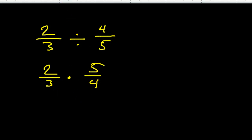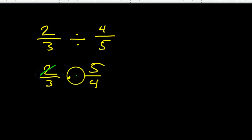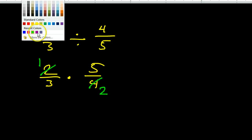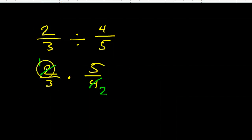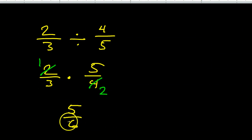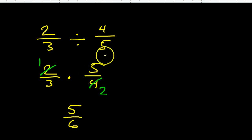I can go ahead and simplify this. Two and four are both divisible by two, so this will become one and this will become two. My final answer would be one times five is five, three times two is six — so five-sixths. Again, to divide by a fraction, you simply multiply by the reciprocal, turn it upside down.